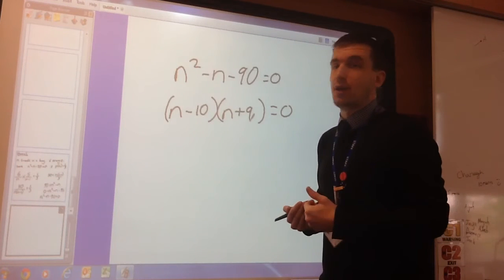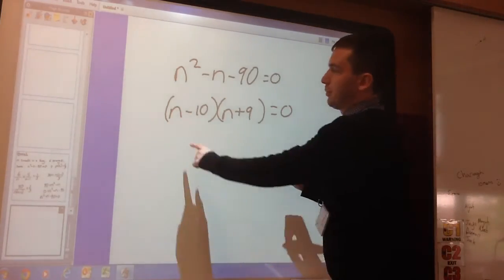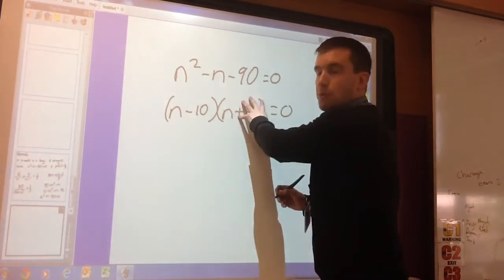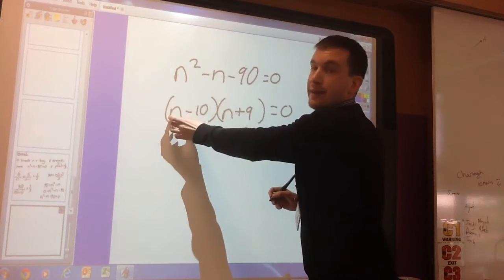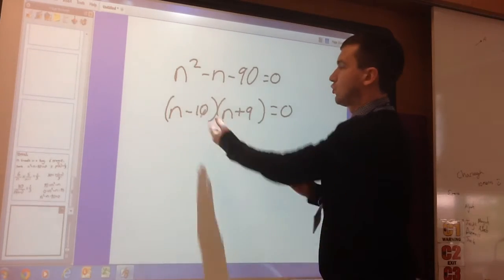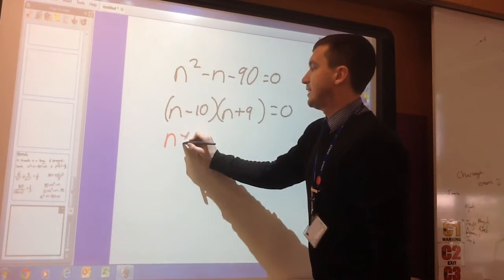Anything times zero is zero. So if I can make this bracket equal zero by putting a number in there, it doesn't matter what's in there. So this N could be 10. Because 10 take away 10 is zero. It doesn't matter what's in there because zero times anything. So for this case, N is 10.